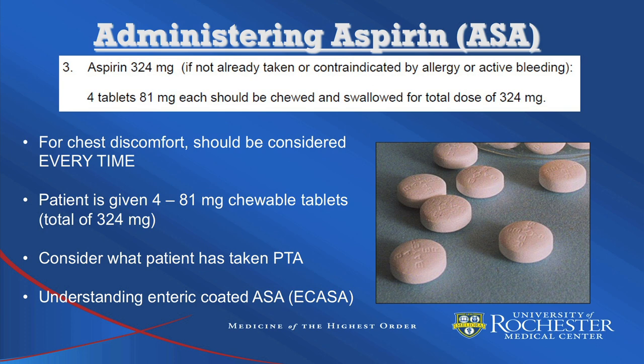Many patients take enteric-coated aspirin, which has a special coating that does not allow it to dissolve in the stomach but rather in the intestine. This helps reduce GI upset for patients who take aspirin regularly. However, in an acute setting, it significantly delays the time for the patient to realize the benefit of aspirin, since it takes much longer to enter the bloodstream. Therefore, if a patient has taken enteric-coated aspirin recently, that dose should not be considered immediately effective, and the patient should be given the normal dose of chewable aspirin tablets. If there is any doubt that the patient has received the total 324 mg, it's best to give the entire dose.